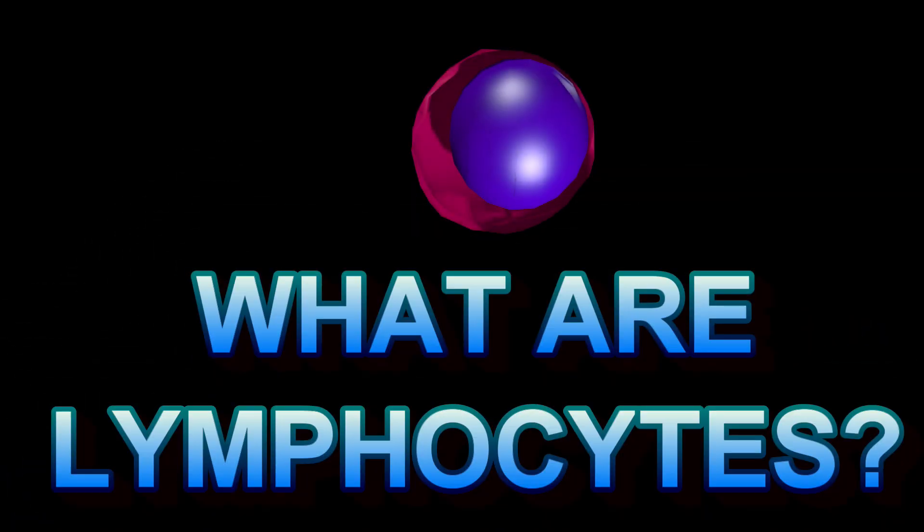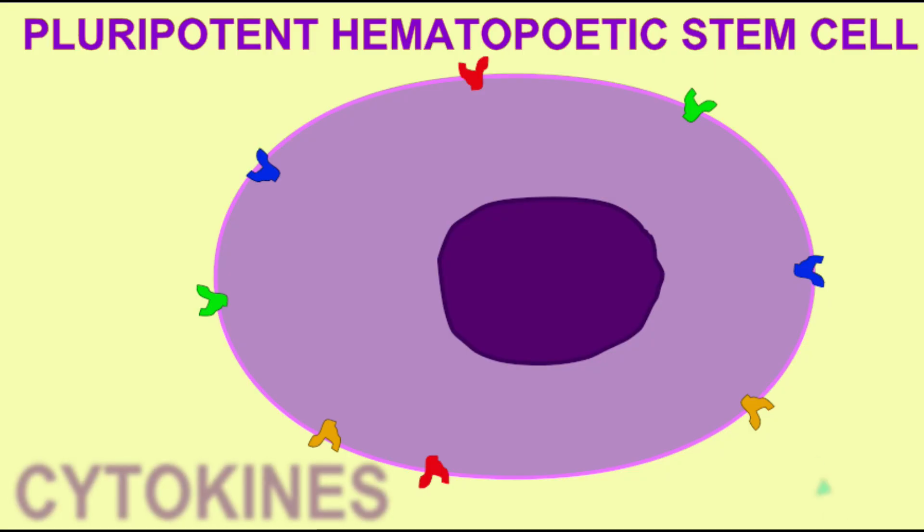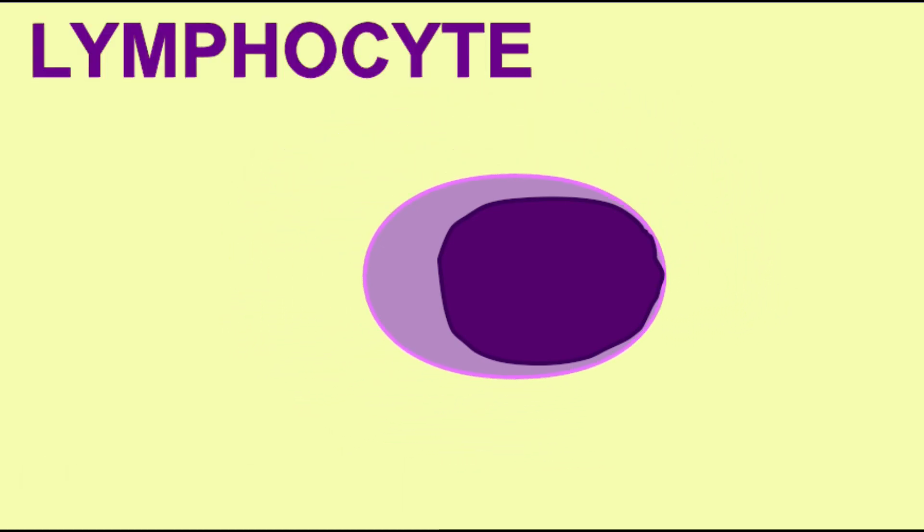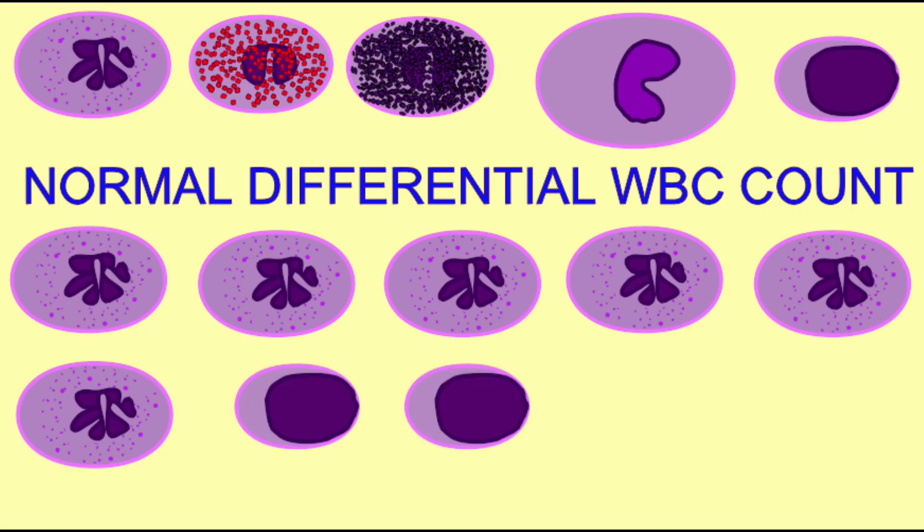Lymphocytes are white blood cells which are produced in the bone marrow like all white blood cells. They are the second most abundant white blood cell in circulation, representing 20 to 40 percent.